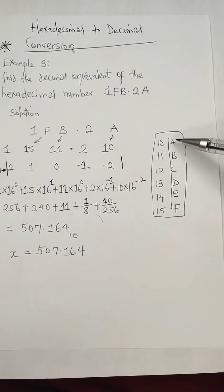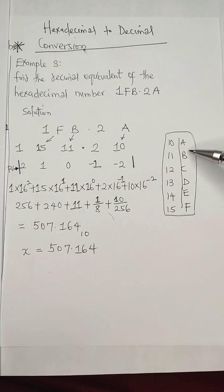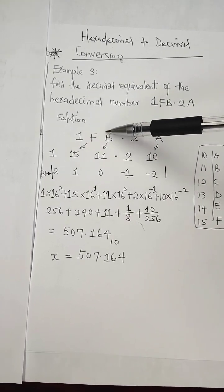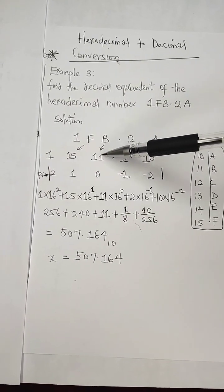In this part, we have A to be 10, B to be 11, and F to be 15. So we'll replace those given hexadecimal values with 15, 11, and 10.